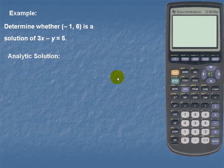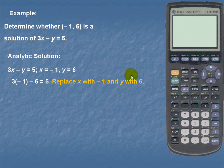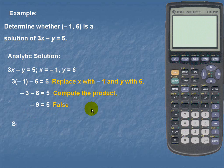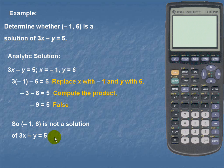Here's the analytic solution. We'll take our equation 3x minus y is equal to 5, and we'll replace x with negative 1 and y with 6. Once we simplify and compute the product, we see that on the left-hand side we have negative 3 minus 6, and on the right-hand side we have 5. Upon simplifying, we see that negative 9 is not equal to 5, which is a false statement. Therefore, the ordered pair negative 1 comma 6 is not a solution of the equation 3x minus y is equal to 5.